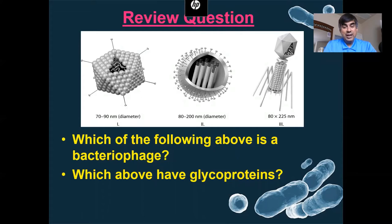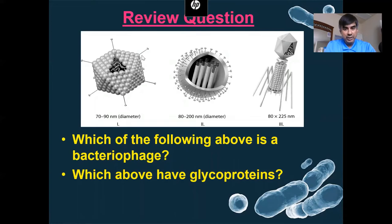Hopefully you looked at these three pictures. Number three is the bacterial phage — this shape makes it specific to attacking just bacteria. For glycoproteins, hopefully you said one and two. These things right here are called glycoproteins. We see them in the spherical virus and the adenovirus. Glycoproteins are receptors found in viruses that make them specific to attacking a particular host cell.